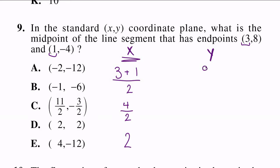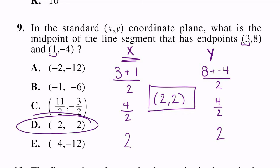We do (8 + (-4))/2. 8 + (-4), that's 4, and 4 divided by 2, that's 2 again. So our midpoint is going to be (2, 2). We look at our answers and D matches.